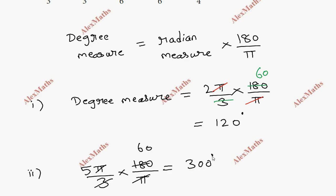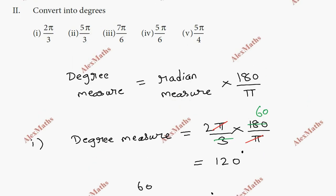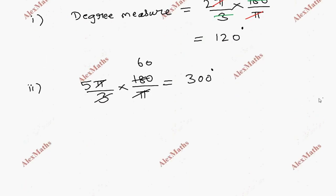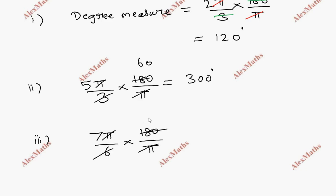Third subdivision: 7π/6. So 7π/6 into 180/π. The π cancels. 180 divided by 6 equals 30. Then 7 times 30 equals 210 degrees. So 7π/6 equals 210 degrees.